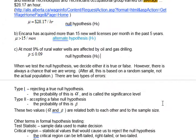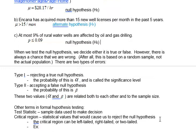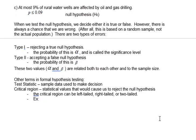Either error type could be the one with the more significant consequence. Those consequences range from someone might sue you to someone might die if you get it wrong. So making those decisions definitely depends on the situation. The test statistic is whatever sample values we're using to make the decision, and the critical region is the set of statistical values that would cause us to reject the null hypothesis.